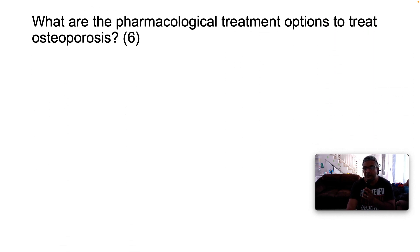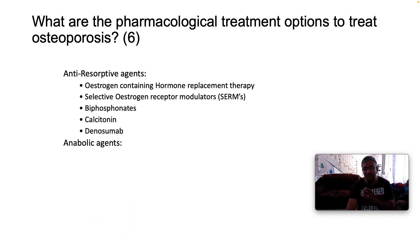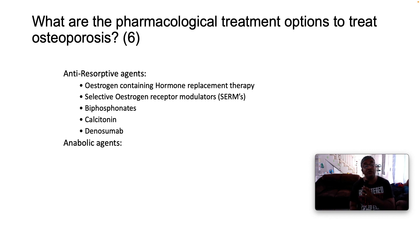What are the pharmacological treatment options for osteoporosis? These are sub-categorized into anti-resorptive agents versus anabolic agents. Anti-resorptive agents include estrogen-containing hormone replacement therapy, SERMs (selective estrogen receptor modulators), bisphosphonates — the most famous in this category — calcitonin, and denosumab, which is a RANK-L receptor ligand. The anabolic agent is teriparatide, a parathyroid hormone analog.